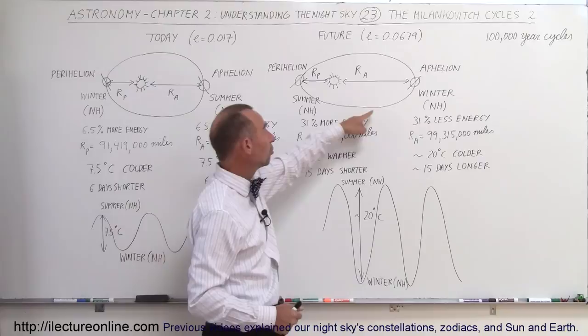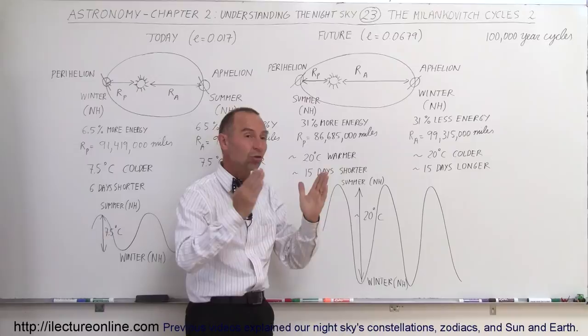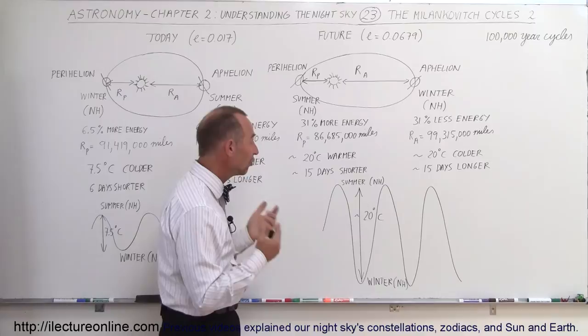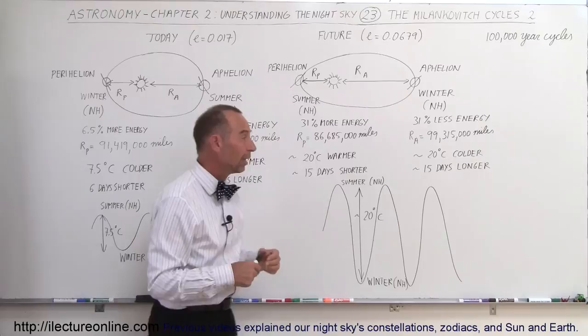Not only that, because of Kepler's laws, the Earth will move much, much slower when we're in our winter and much faster in the summer. Summers will be much shorter, winters will be much longer, as much as 15 days difference between summer and winter, and so the temperature swing will be absolutely enormous between the summer and the winter.